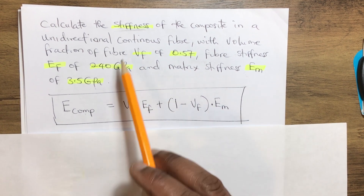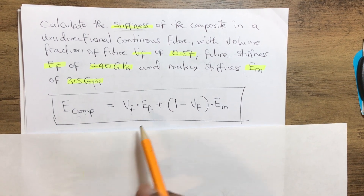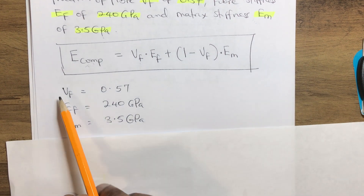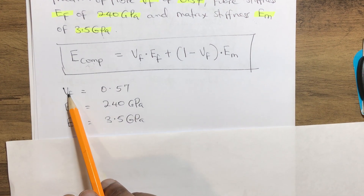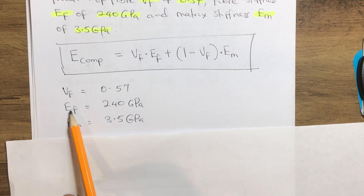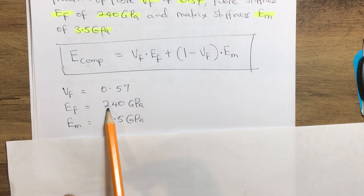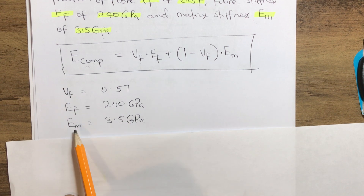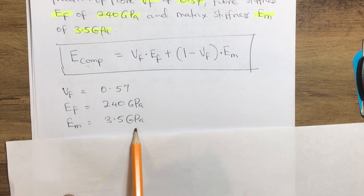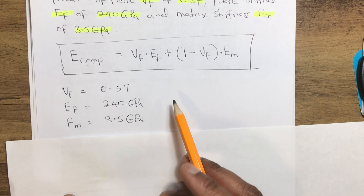Let's pull out the parameters. We have Vf, the volume fraction of the fiber, which is 0.57. We have Ef, the stiffness of the fiber, which is 240 gigapascals. And we have Em, the stiffness of the matrix, which is 3.5 gigapascals. Now let's substitute these into our formula.